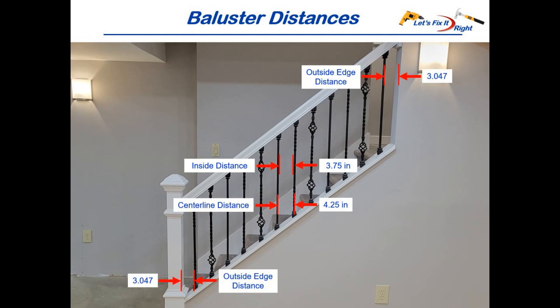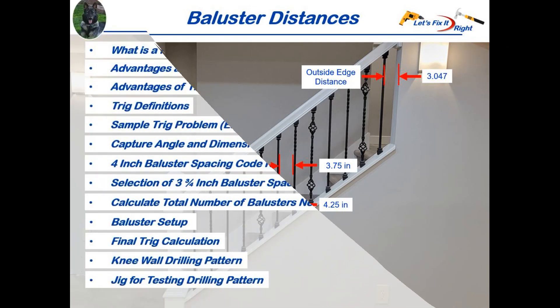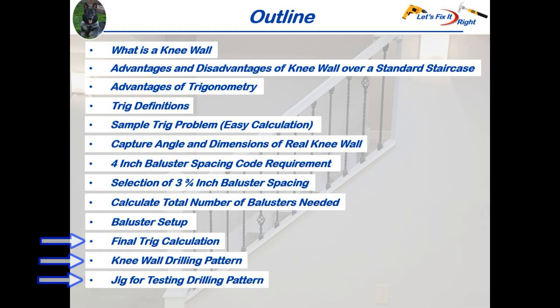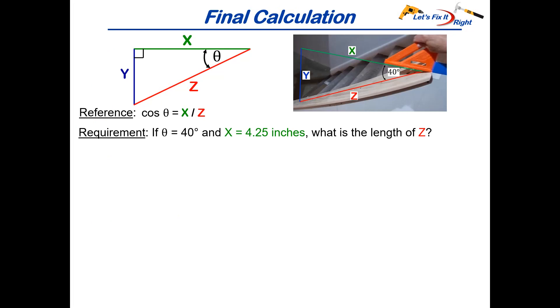These are our baluster distances. As discussed our inside distance of 3.75 inches is less than our 4 inch code requirement. And as I mentioned 4.25 inches is our centerline drilling distance for the balusters. We've also allocated 3.047 inch spaces on the outside of the 1st and 12th baluster.